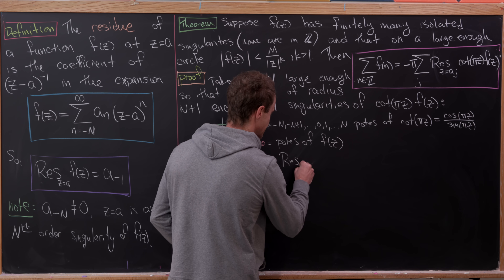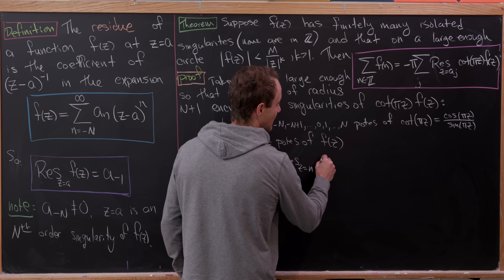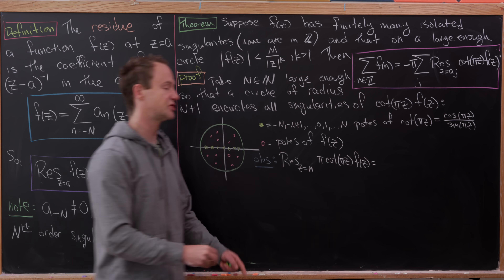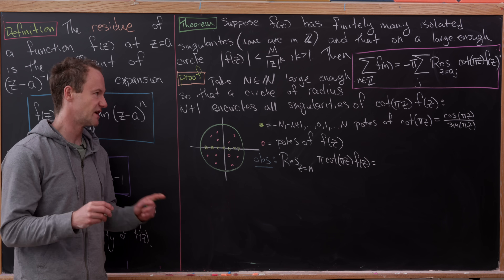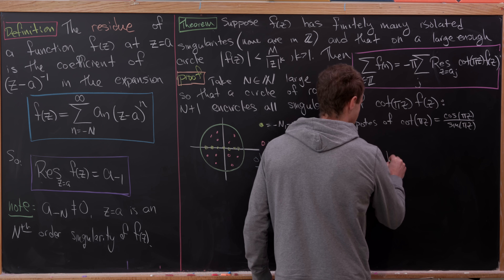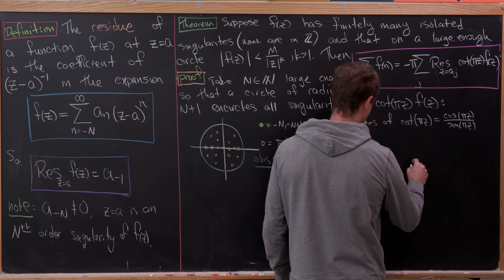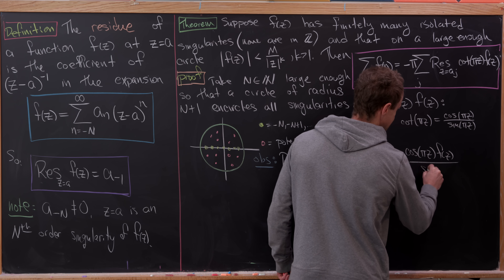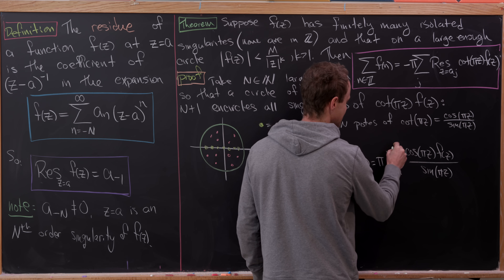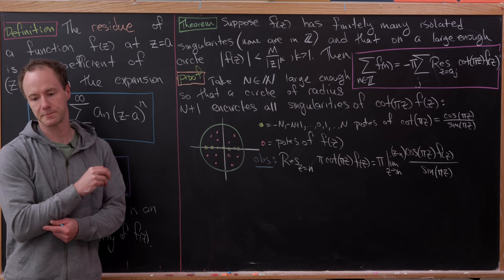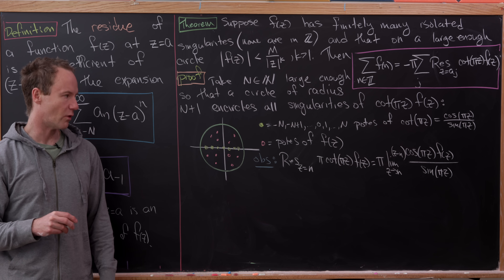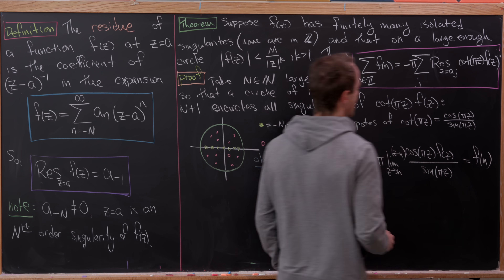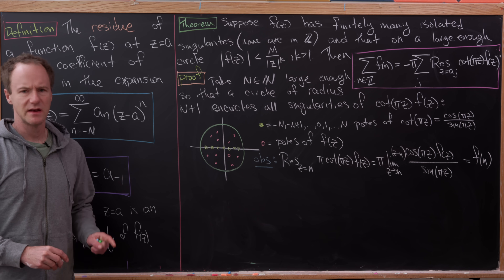Let's calculate the residue at the integer poles. The residue at z equals n of π times cotangent(πz) times f(z): these are all simple (first order) poles, so this is π times the limit as z goes to n of (z minus n) times cosine(πz) times f(z) over sine(πz). Via L'Hôpital's rule or any method, this gives the value f(n).